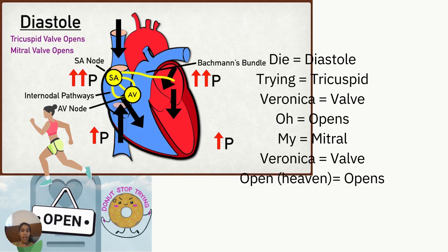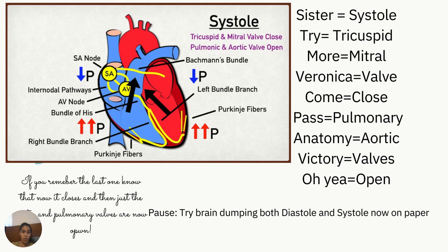For diastole, use this mnemonic: 'Di, trying Veronica, oh my' — diastole is when the tricuspid valve opens and the mitral valve opens. For systole, these now close: the tricuspid and mitral valves close, and the pulmonic and aortic valves open. Try writing down diastole and systole on paper and understanding what is happening. Systolic blood pressure skyrockets as blood is moving; diastolic is dying down — blood pressure falls during diastole.